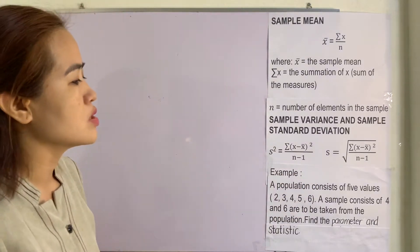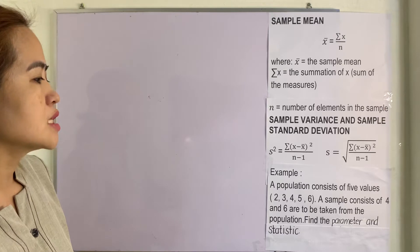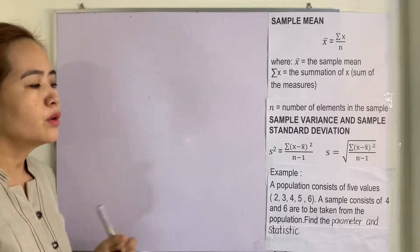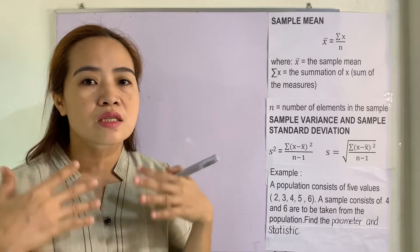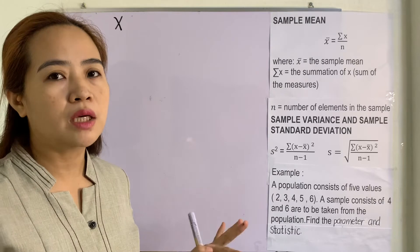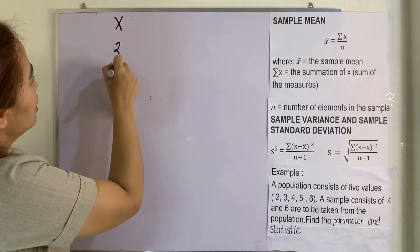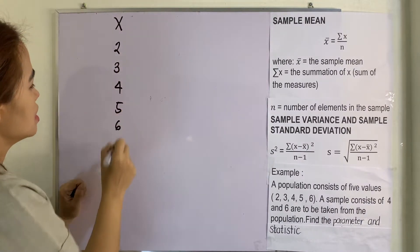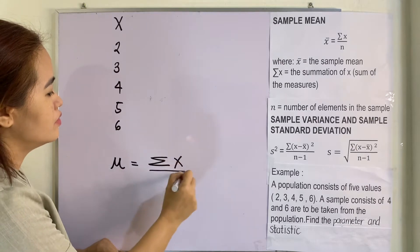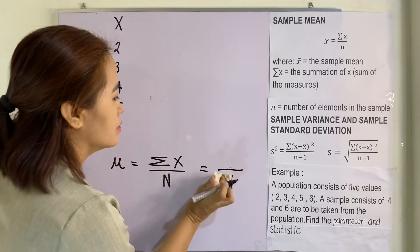Example: a population consists of five values — 2, 3, 4, 5, 6. A sample of 4 and 6 is to be taken from the population. Find the parameter and statistics. For the parameter, we get the population mean, standard deviation, and variance. Using mu equals summation of x divided by n, with n equals 5: 2 plus 3 plus 4 plus 5 plus 6 equals 20, divided by 5 equals 4. So our population mean is 4.